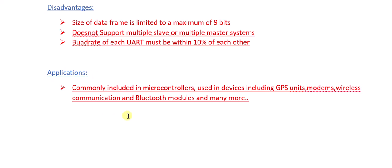UART is commonly used in microprocessors and microcontrollers, and in devices including GPS units, modems, wireless communication systems, and Bluetooth modules, among many others. Since UART is a fundamental part of microcontrollers and microprocessors, it is used wherever those are found. That covers everything about UART — Universal Asynchronous Receiver Transmitter. Please subscribe to my YouTube channel and press the bell icon for the latest updates. Thank you, bye.